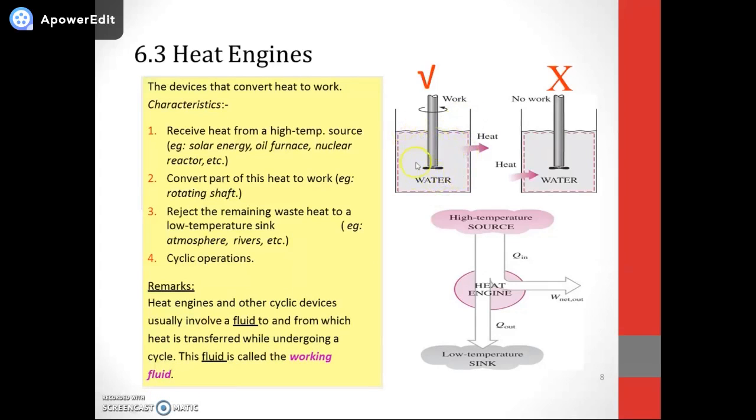For example, water being stirred can produce heat and supply heat. Work is done to stir the water, and the water produces energy. However, if you supply heat to the water, it doesn't make the stirrer move - there's no work happening on the shaft. This shows the difference between work producing heat versus heat producing work.